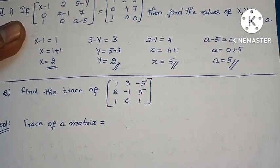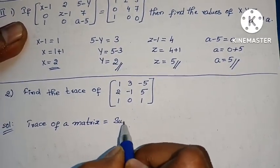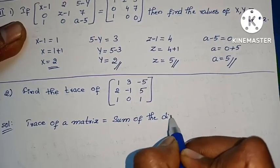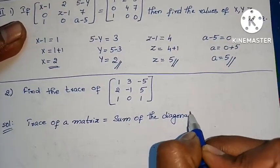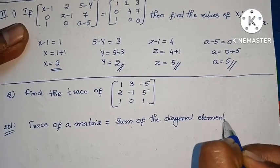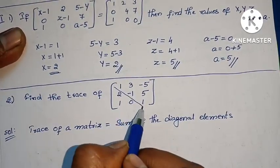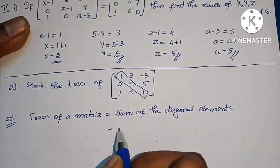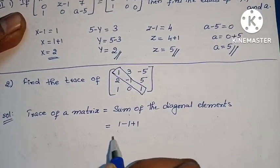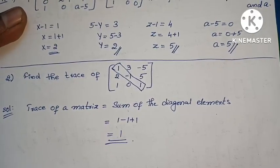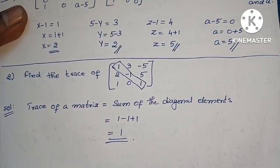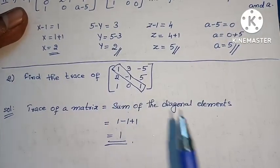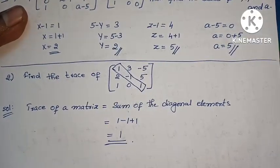Next problem: find the sum of the diagonal elements. The diagonal elements are the same as the diagonal elements. Adding: 1, minus 1 plus 1, plus 1, minus 1 cancel — answer is 1. That is the problem complete. The trace of a matrix is the sum of the elements of the diagonal. Very simple.